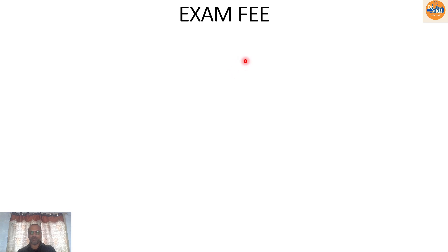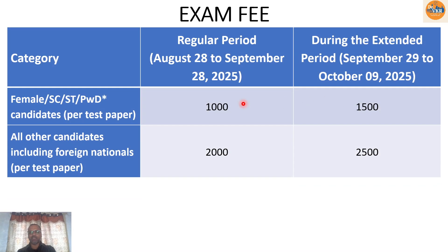Regarding the exam fee: without late fee, the deadline is September 28th; with late fee it is October 9th. For female, SC, ST, and PWD candidates, the fee is ₹1,500 without late fee. For all other candidates including foreign nationals, it is ₹2,000 per test paper without late fee and ₹2,500 with late fee. If opting for two papers, you pay separately for each — so ₹2,000 + ₹2,000 = ₹4,000, or ₹1,500 + ₹1,500 = ₹3,000 for the reserved categories.